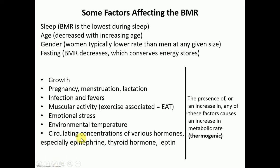The following factors increase our BMR: growth — that's why kids have high BMR, a process known as thermogenesis — pregnancy, menstruation, lactation, infections and fever. With all the activity of the immune system fighting off an infection, metabolism tends to increase. Muscular activity — known as exercise-associated thermogenesis — also increases metabolism, as do emotional stress and environmental temperature. Those in warmer climates have a higher BMR than those in colder climates.